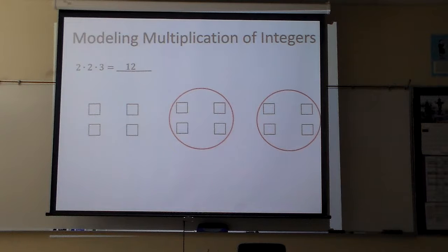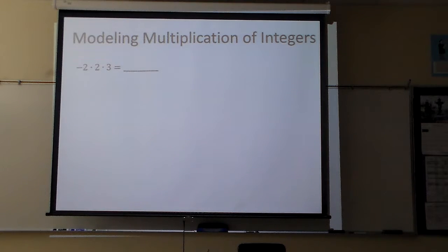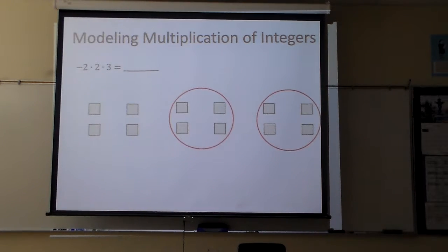Like I said, just doing a little extra multiplication there. Now this time I have a negative 2. So I'm going to have 2 groups of negative 2, and then I'll have that 3 times. So I actually end up with a total of what? Negative 12 of those.